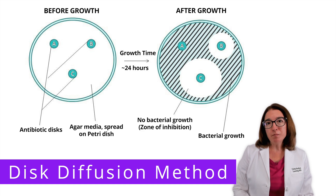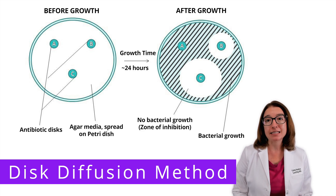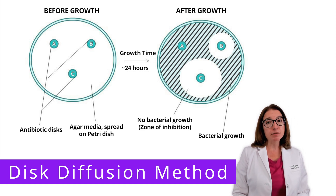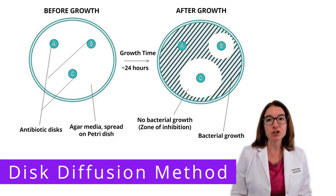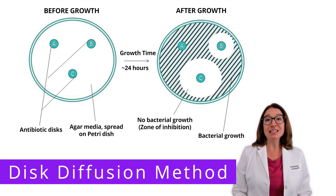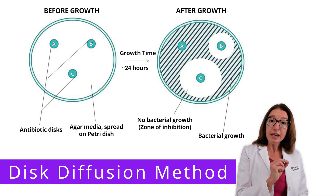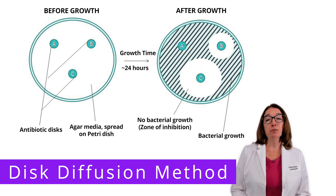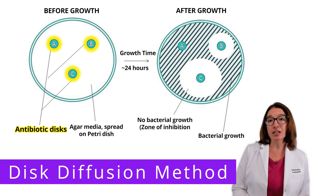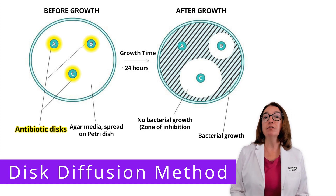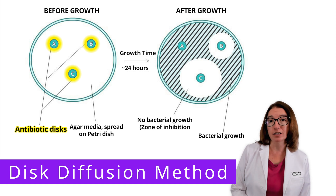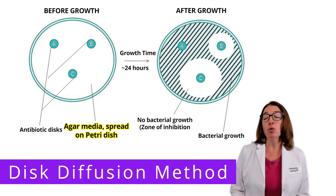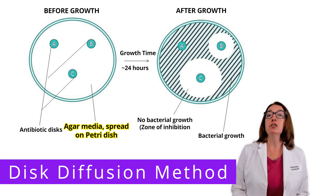Next, we have the disc diffusion method, which is also known as the Kirby-Bauer test. During this test, we are evaluating the susceptibility of specific microorganisms to chemicals or antimicrobial agents — in other words, testing to see if a specific chemical or antimicrobial agent can inhibit the growth of a specific microbe. Filter paper discs, labeled A, B, and C in this image, are soaked in known concentrations of different chemicals or antimicrobial agents. These discs are then transferred to an agar plate inoculated with a known concentration of the bacteria we're trying to inhibit or kill.